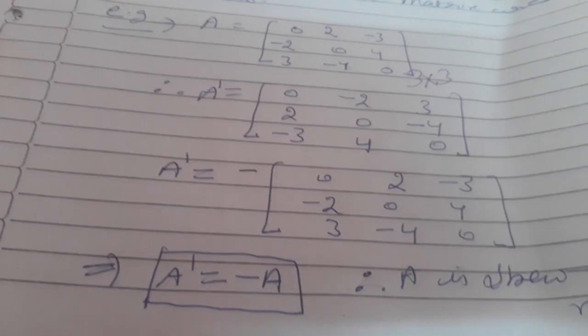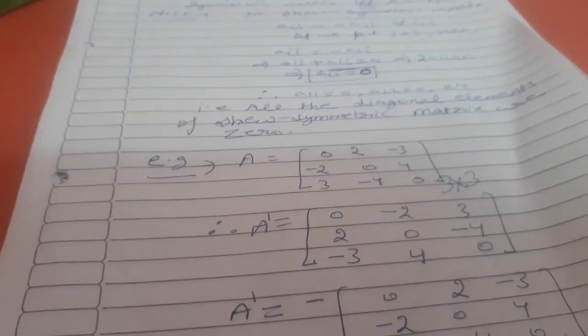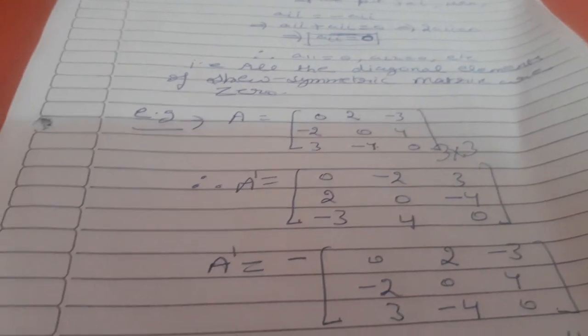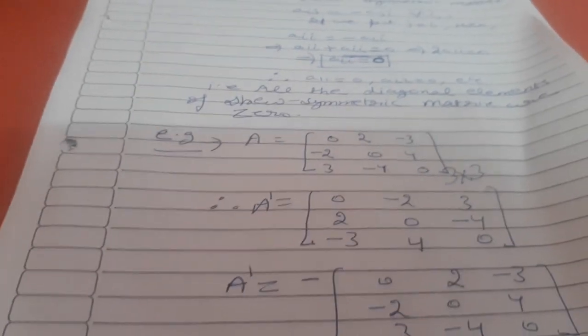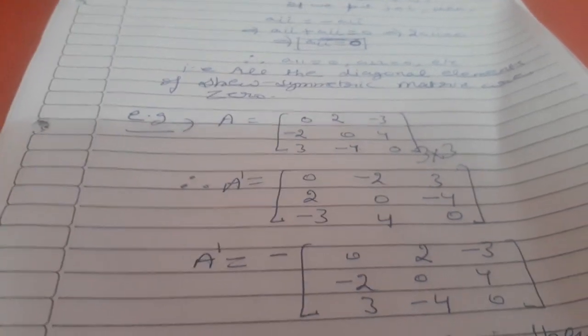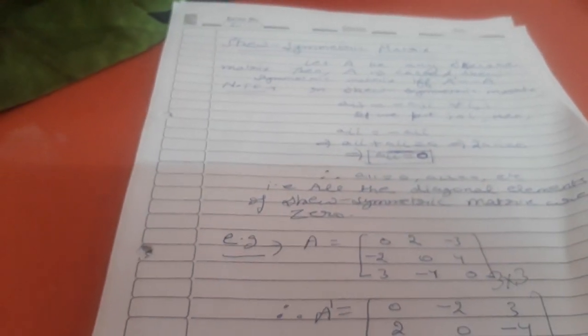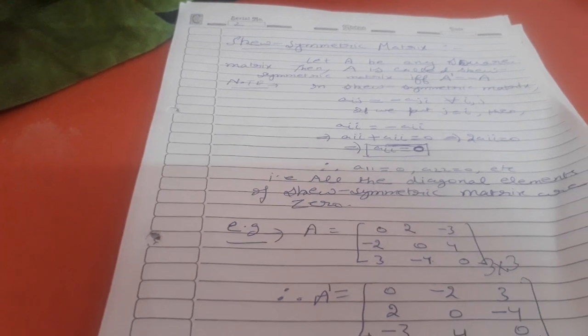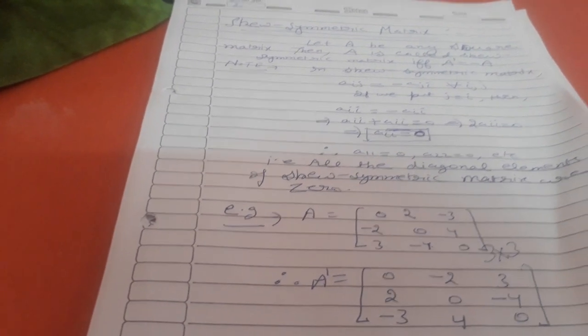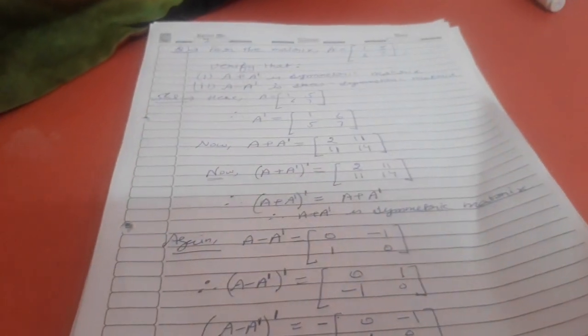To summarize: a square matrix is symmetric when its transpose equals the original matrix, with Aij equal to Aji. A skew-symmetric matrix has all diagonal elements equal to zero, and its transpose equals minus A. Now there is a question ahead.